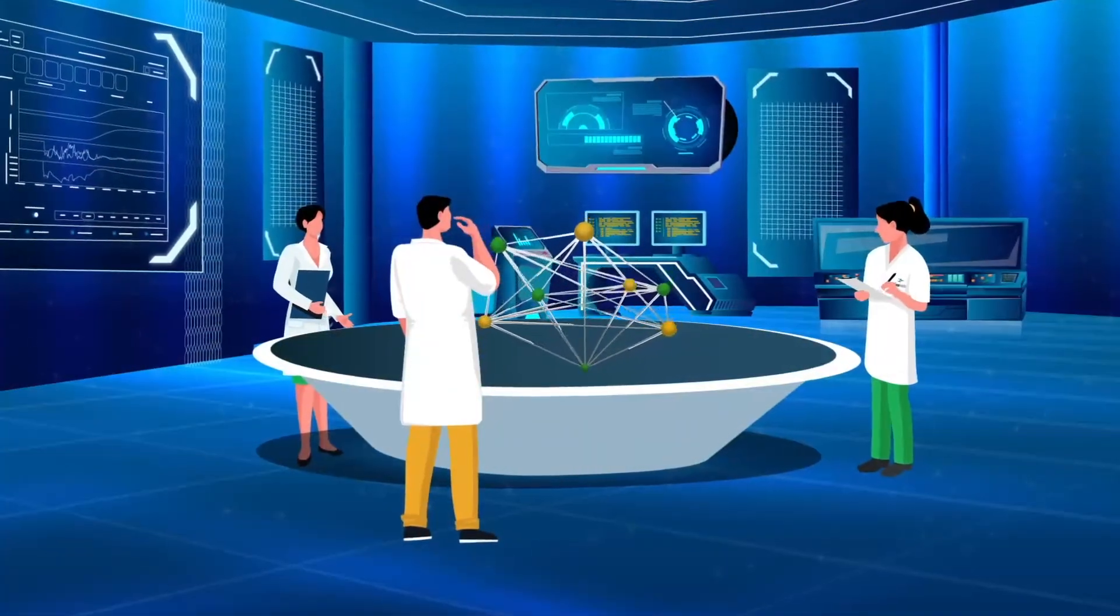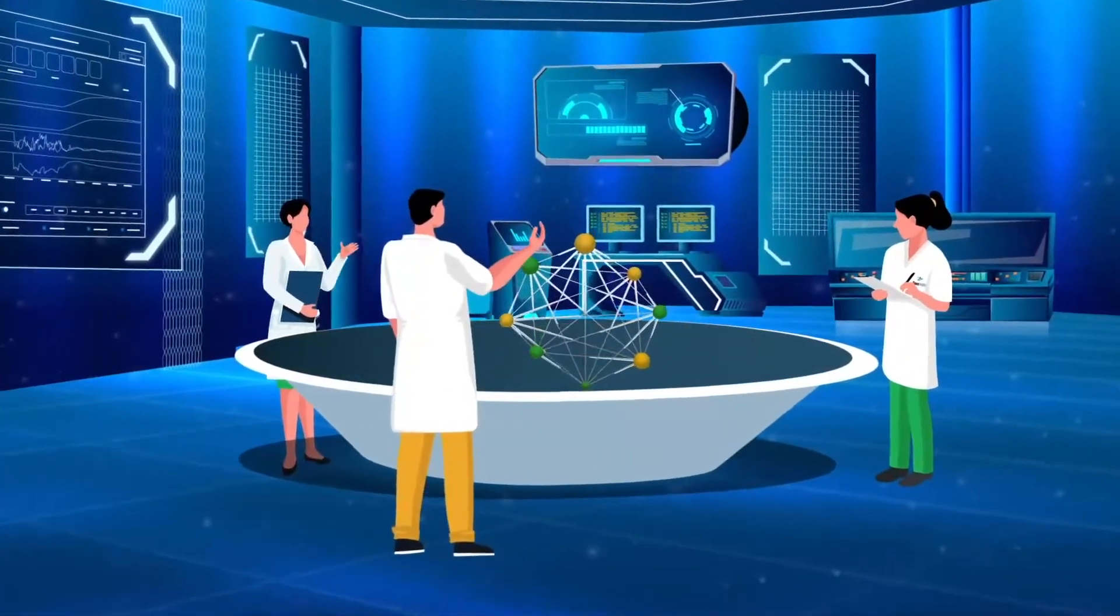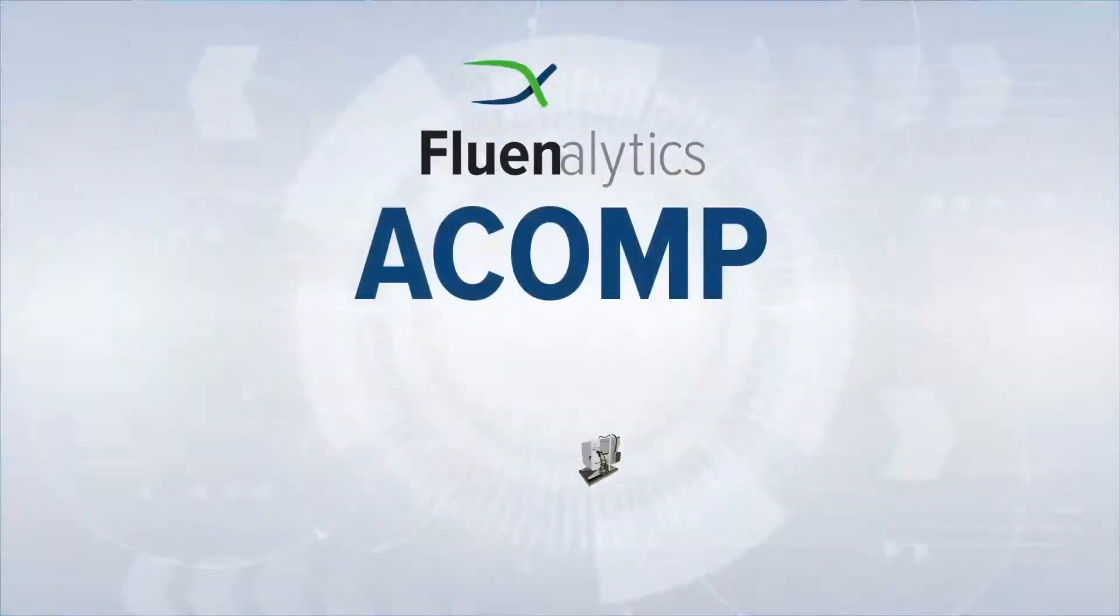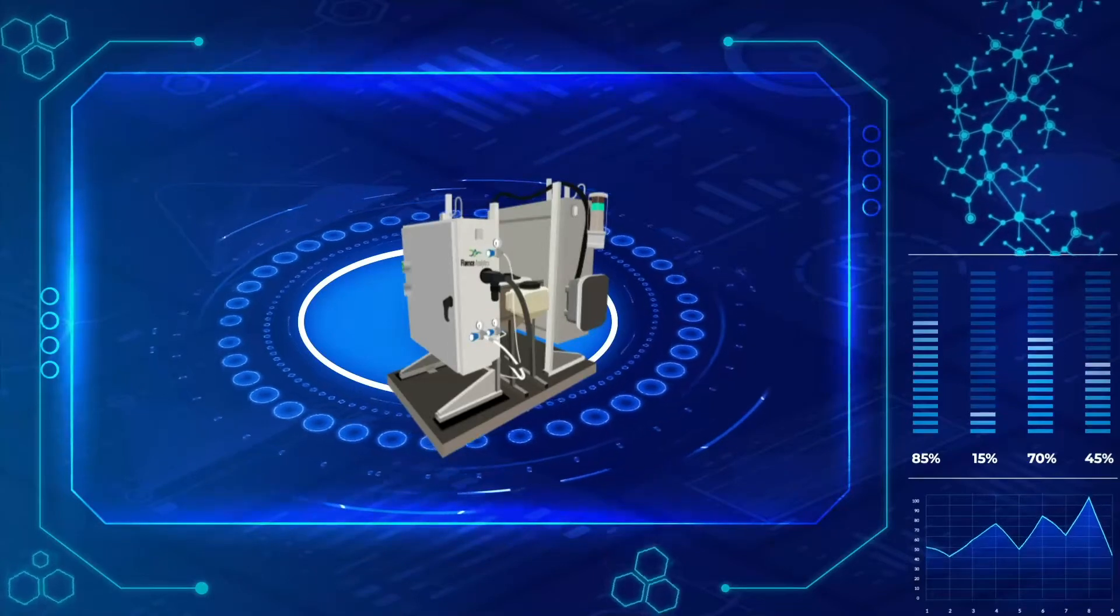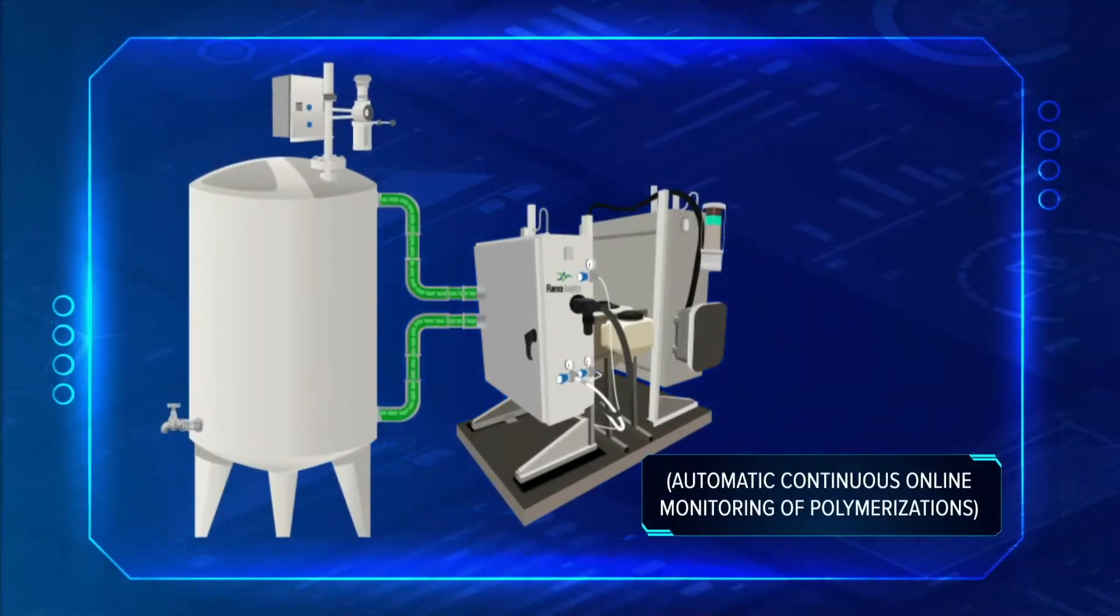Some of the brightest minds in polymer physics have worked on this problem for more than 20 years, and the result was ACOMP, which is available for both lab and industrial applications. Automatic Continuous Online Monitoring of Polymerizations, or ACOMP, is a smart manufacturing system.